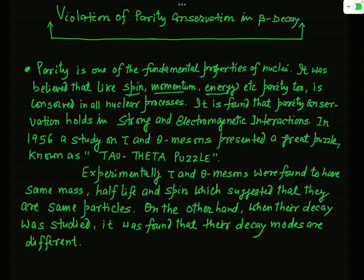Parity remains conserved in strong interactions and electromagnetic interactions, but in 1956, during the study of the tau meson and theta meson, it was found that there was a serious problem — parity was not conserved during the decay of the tau meson and theta meson. This was a great puzzle of the 20th century, known as the tau-theta puzzle.